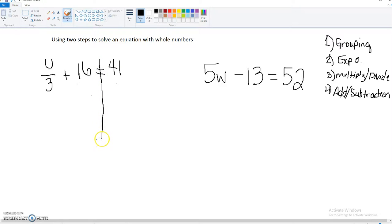So we're going to look at this first example. We've got u divided by 3 plus 16 equals 41. Our focus is to get u by itself. So that means this 3 and this positive 16 need to go to the other side. We're going backwards, so we're doing add and subtract first.